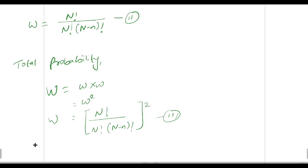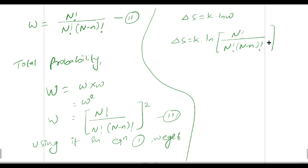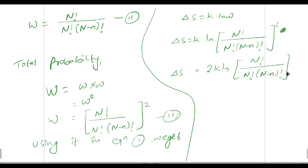Now let's use equation three in equation one. Substituting W into ΔS = k ln W, we get ΔS = k ln [N! / (n! × (N−n)!)]². By the rule of logarithms, the square brings a factor of 2 to the front, giving ΔS = 2k ln [N! / (n! × (N−n)!)]. This is equation number four.